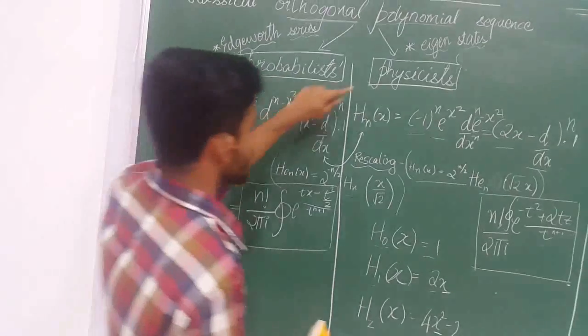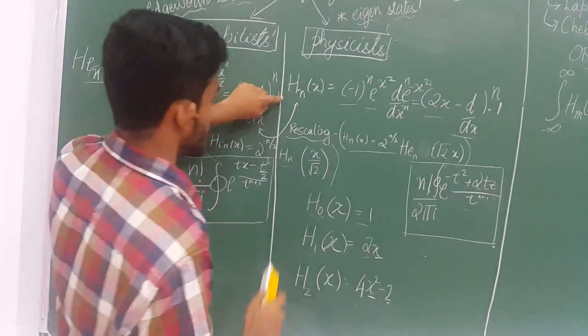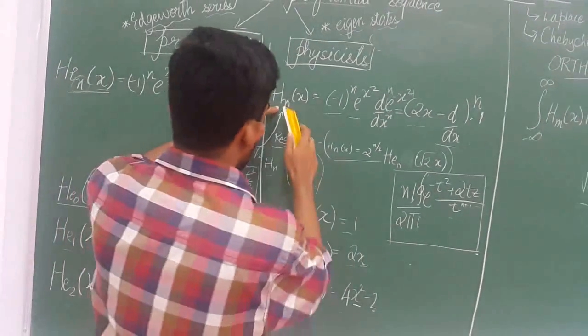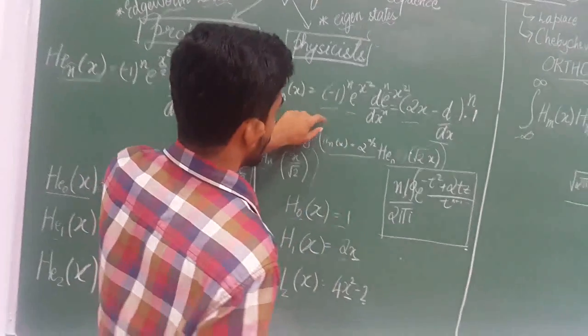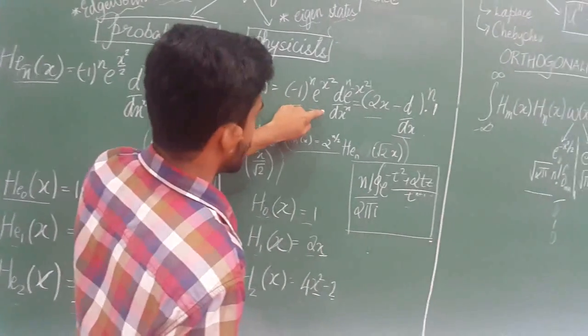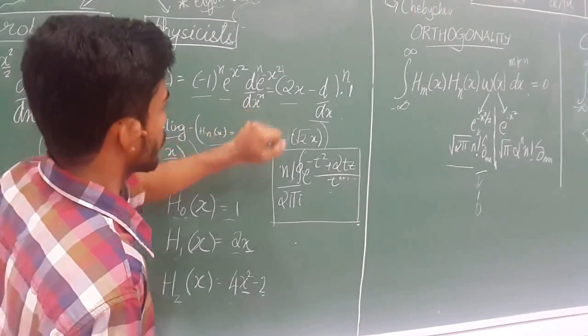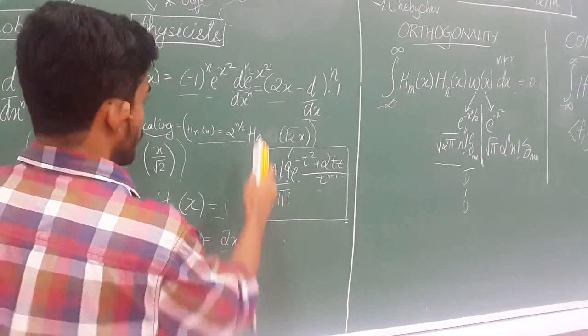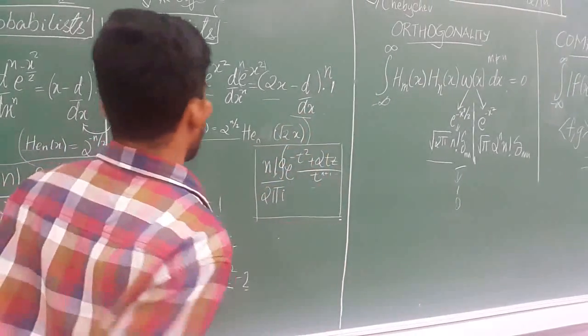And physicist Hermite polynomials can be expressed as H_n(x) = (-1)^n × e^(x²) × the nth derivative of e^(-x²), which equals (2x - d/dx)^n.